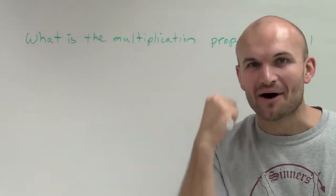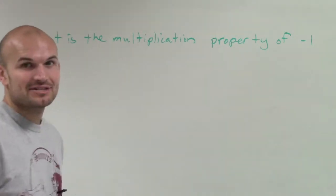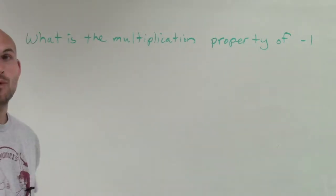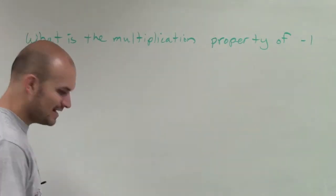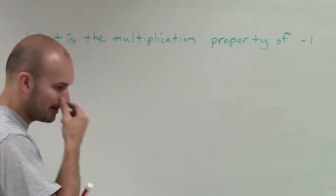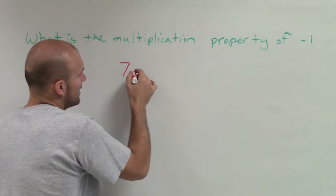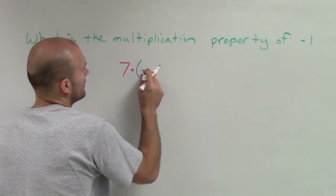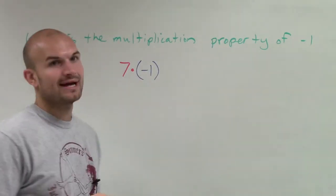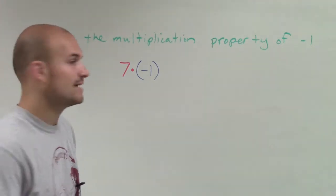That negative one always gets me. What is the multiplication property of negative one? When looking at the multiplication property of negative one, what that means is if I have 7 and I want to multiply it by negative 1, what is going to be my answer? Well, when we went into multiplying positive and negative numbers...